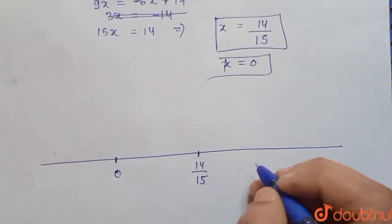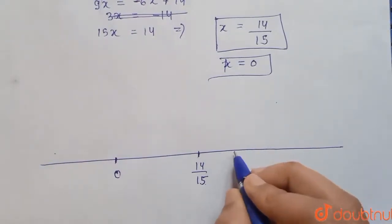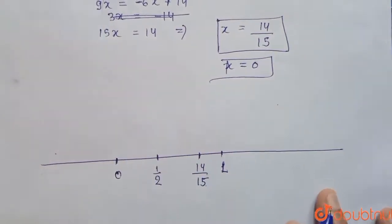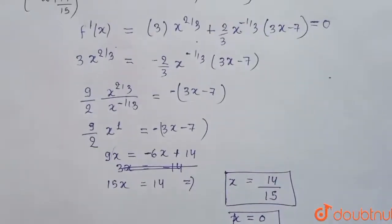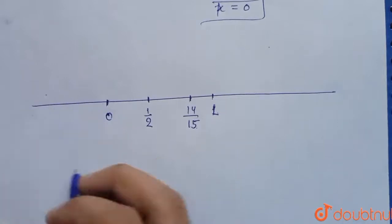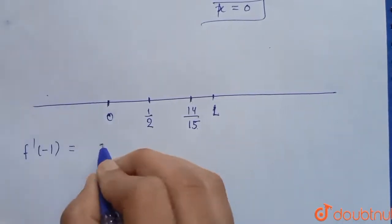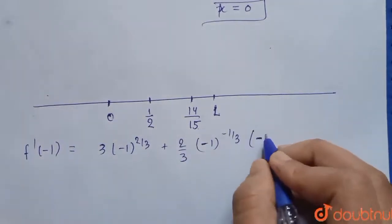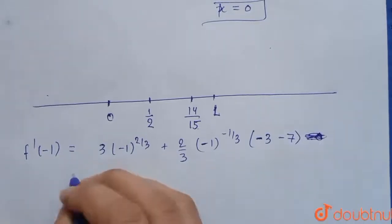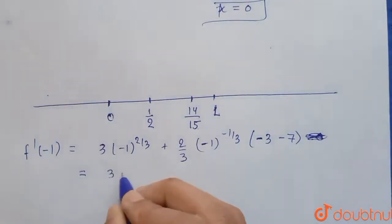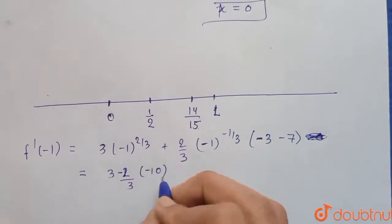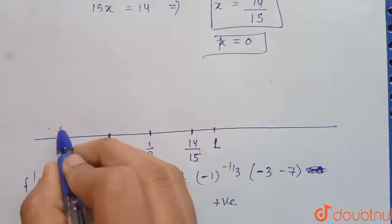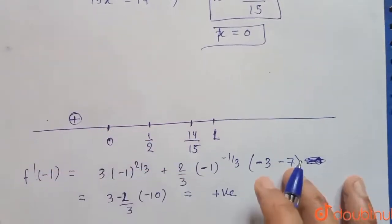Since 14/15 ≈ 0.933, these two points divide the number line into three intervals. Testing x = -1 in f'(x): we get 3·(-1)^(2/3) + 2/3·(-1)^(-1/3)·(3(-1) - 7), which gives a positive value. So f'(x) > 0 for x < 0.